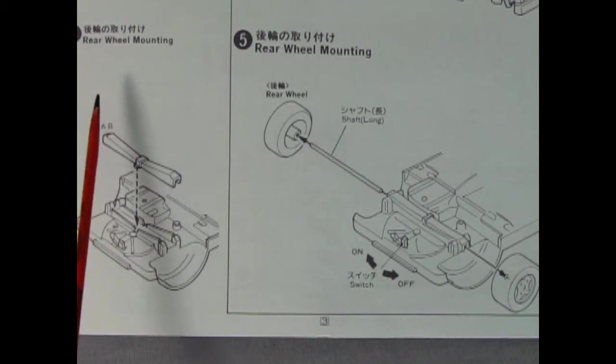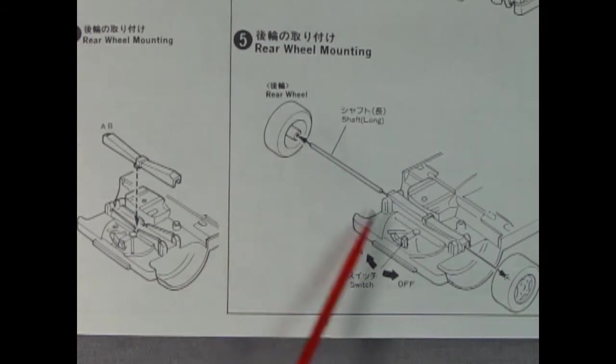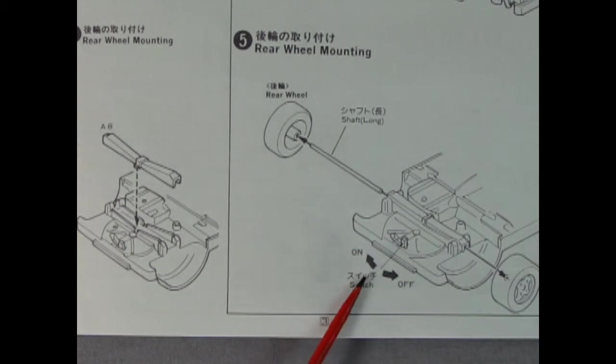On the back end we have a rear wheel mounting. This is a bar that goes across and locks into place, followed by our rear axle and our rear wheels. You'll note that the switch is behind and it does have a position this way for on and that way for off.